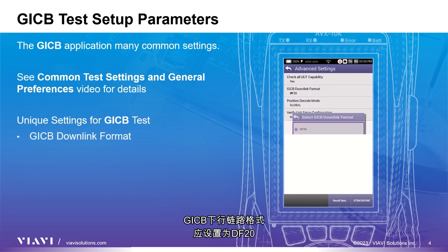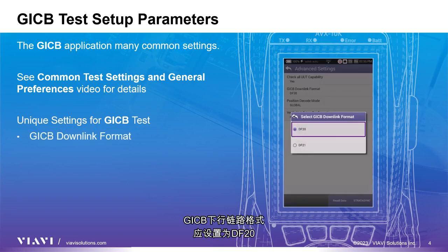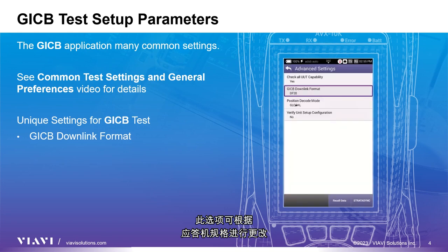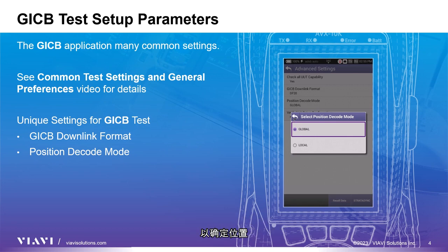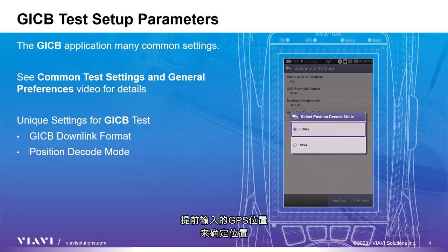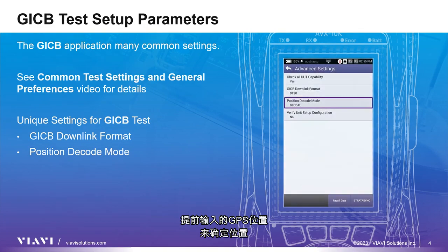The GICB downlink format should be set to DF-20. This option is available for change due to the transponder specification. Position decode mode can be set to either global or local. Global is the most common setting, which decodes two consecutive squitters to determine position. When set to local, the AVX will use one squitter and the entered GPS position to determine location.